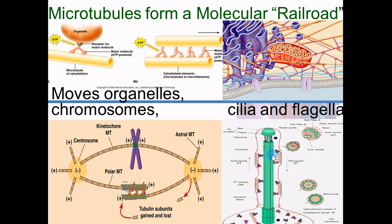To move cilia or flagella, the dynein motor proteins have one half grabbing the cell membrane and the other half standing on the microtubule. When it wants to bend, it walks toward the end to bend the cilia; the other guy grabs and walks away to bend it back. It's an amazing process based on this microtubule railroad. You can move organelles, chromosomes, cilia, and flagella. We used to think the cell was just a glob of fluid, but now we know it's extremely well organized.